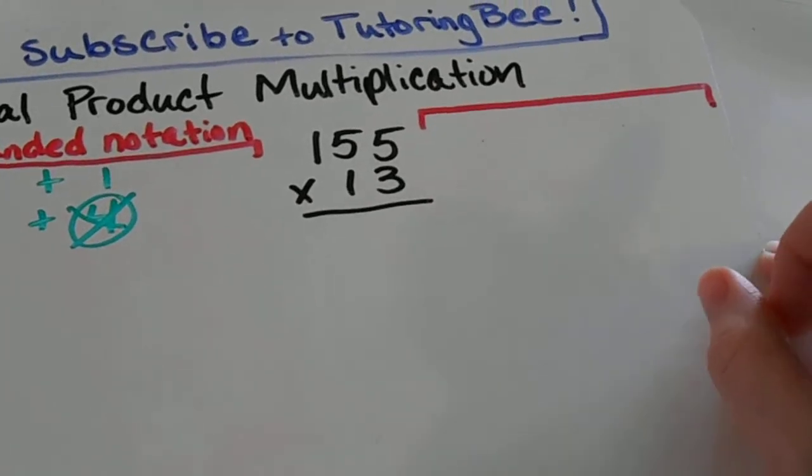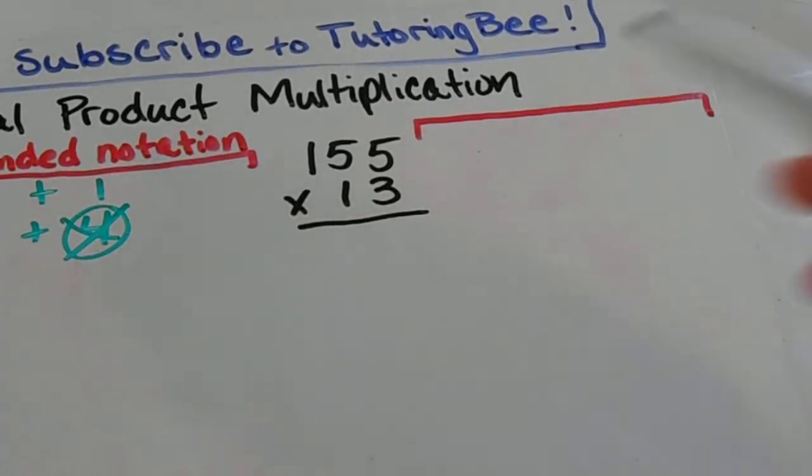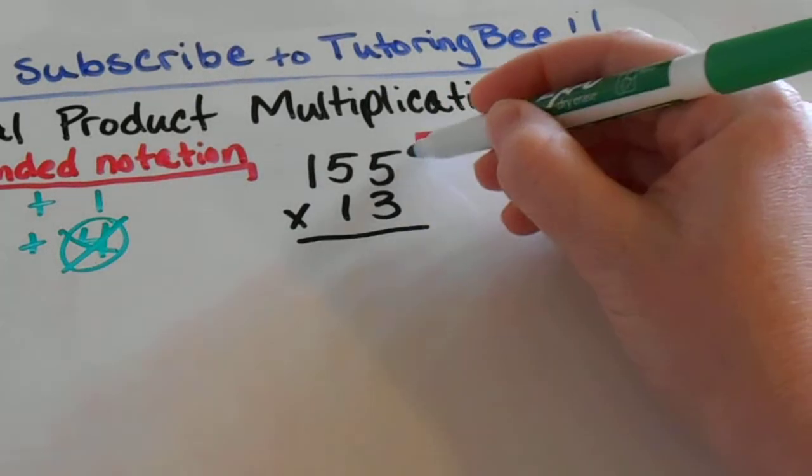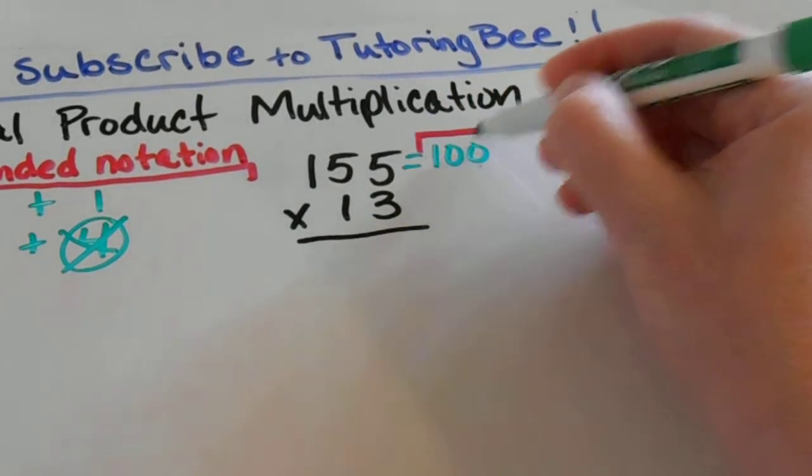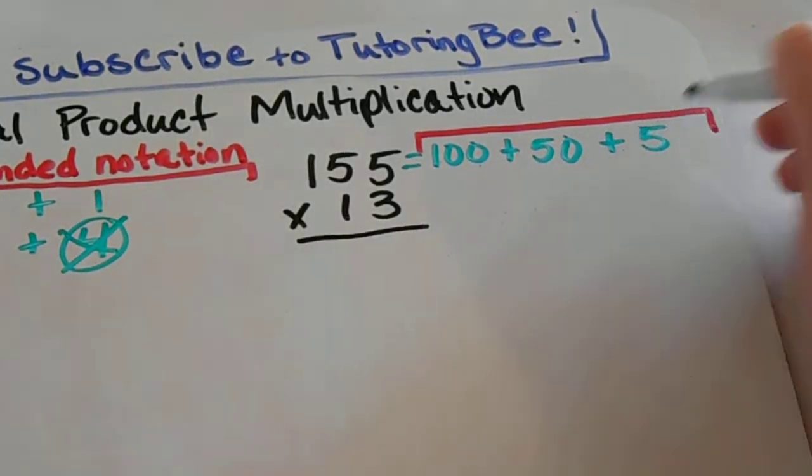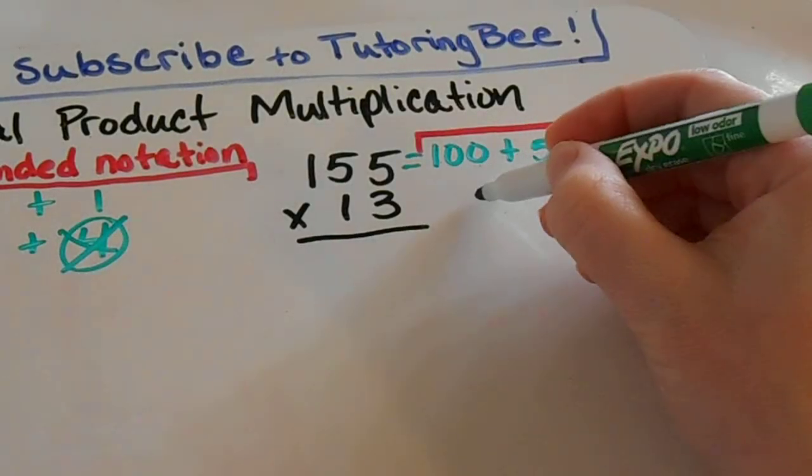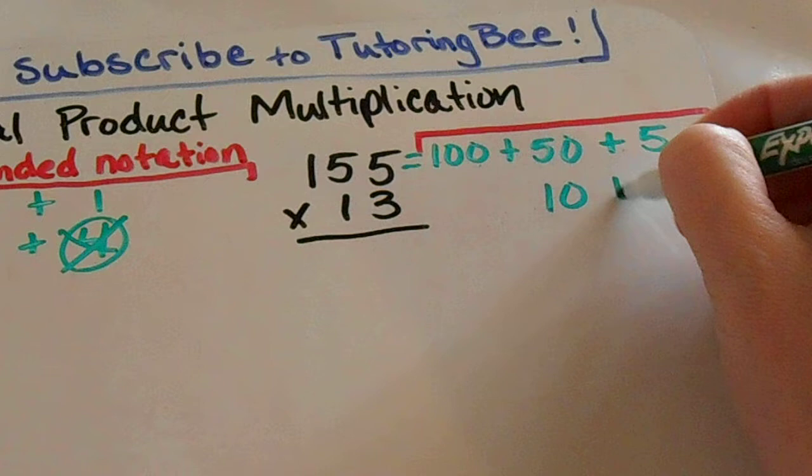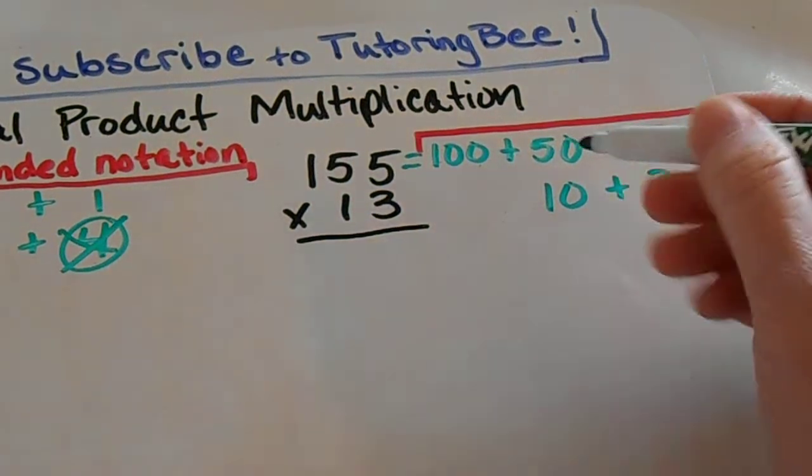I'm going to show you another problem with a little bit bigger problem. We have a 3 digit number times a 2 digit number here. It works the same way. I'm going to take this 155 and break it down into its parts. 100 plus 50 plus 5. And then my 13 since I don't have any hundreds here I'm going to leave that blank. And I have 10 plus 3 to notate my 13.